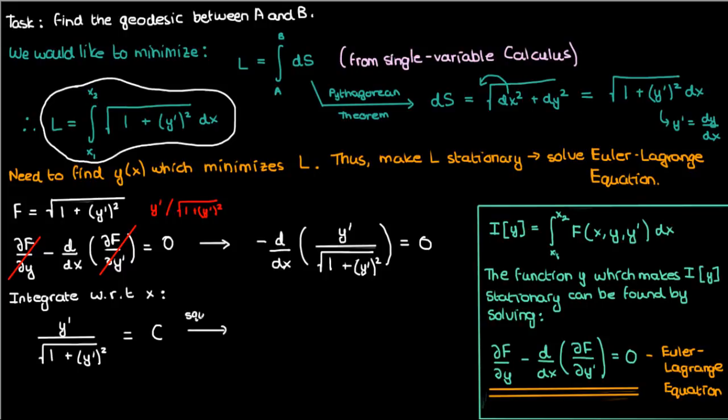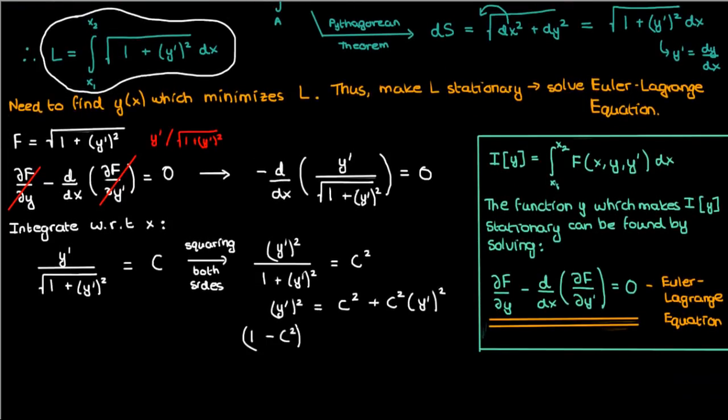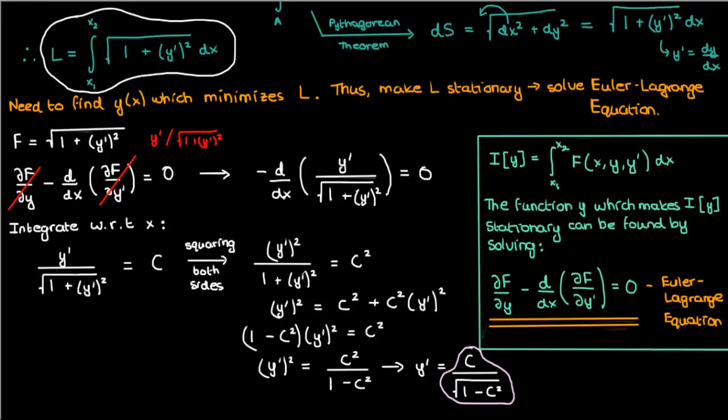We can get rid of the square root by squaring both sides, in which case this is what our equation becomes: y prime squared over 1 plus y prime squared equals c squared. And then we can do some further manipulation of this equation, and after doing that we'll find that y prime is c over the square root of 1 minus c squared, but c over the square root of 1 minus c squared is just another constant that I'll call c1.